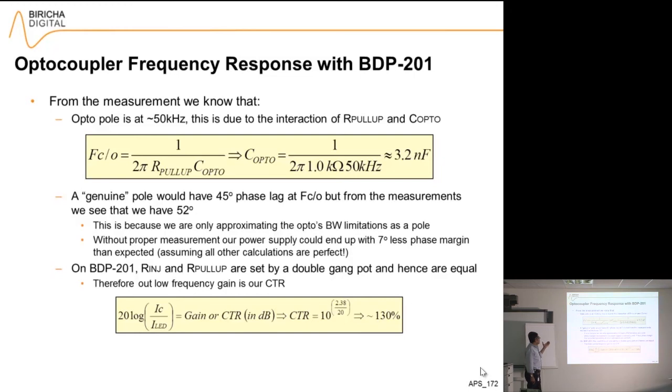Finally, what I'm going to do is work out the value of C_opto, and it's such a simple equation. You have got cutoff frequency equals 1 over 2π R_pullup times C_opto. I measured the cutoff frequency as the minus 3 dB point using the Bode 100, so I have got 50 kilohertz. My pull-up resistor was one kilo-ohm, therefore C_opto is 3.2 nanofarads.